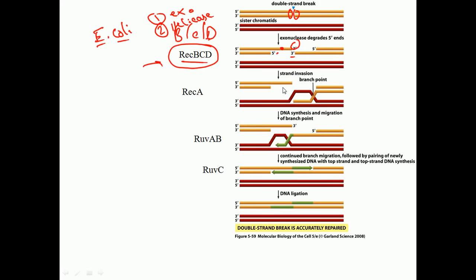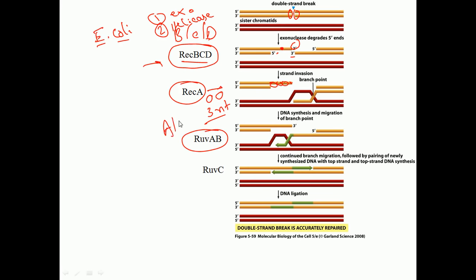Upon reaching the chi sequence, RecBCD stops cleaving from the 3' end but increases chewing activity from the 5' end, ultimately generating 3' overhangs. Once the 3' overhang is generated, RecBCD brings another protein called RecA. RecA, a small protein, binds three nucleotide sequences at once, covering the 3' overhang single-stranded DNA completely, then helps place the strand into the intact DNA — this is the strand invasion step.